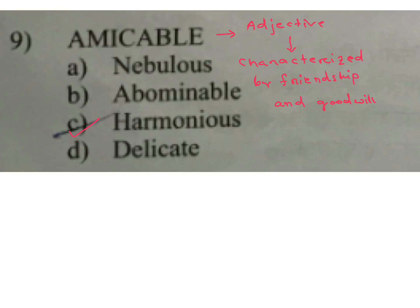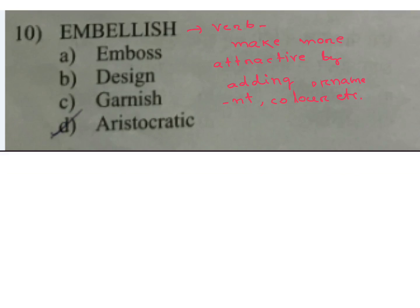Next word: Embellish — meaning: make more attractive by adding ornament, color, etc. Options A) emboss, B) design, C) garnish, D) aristocratic. C is the answer — garnish. This type of question you will also get in banking exam question papers.